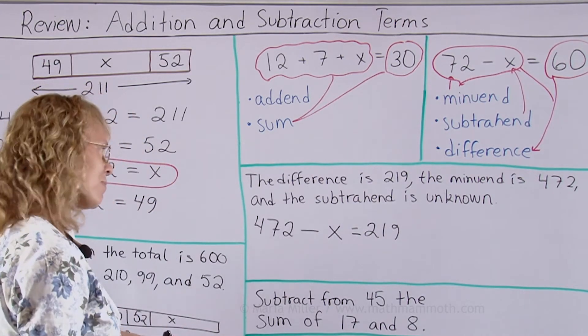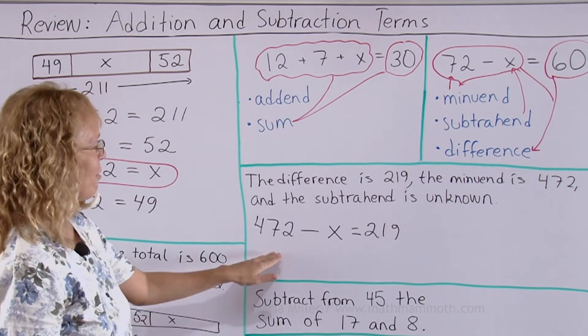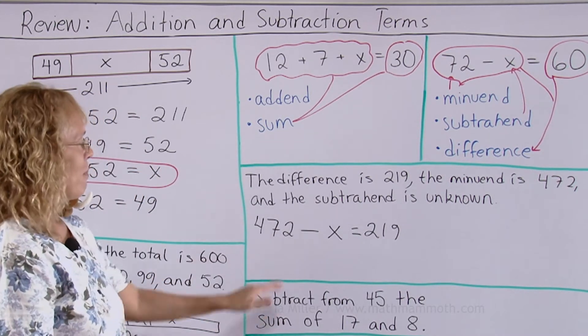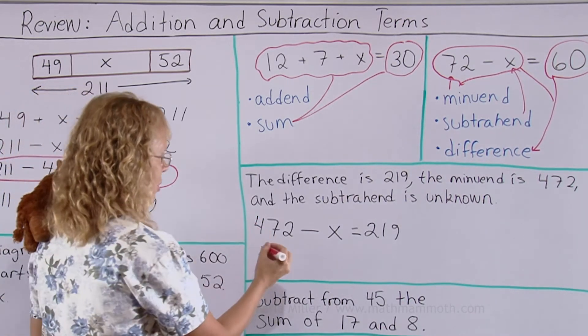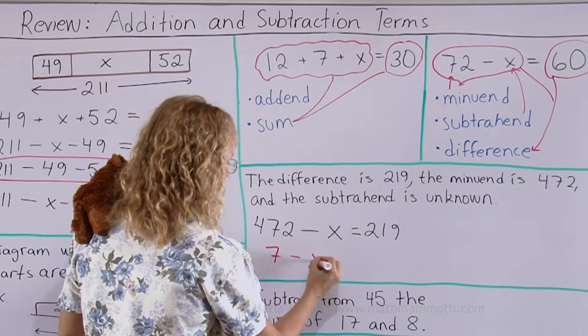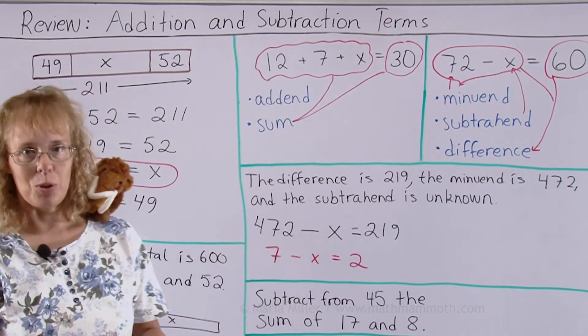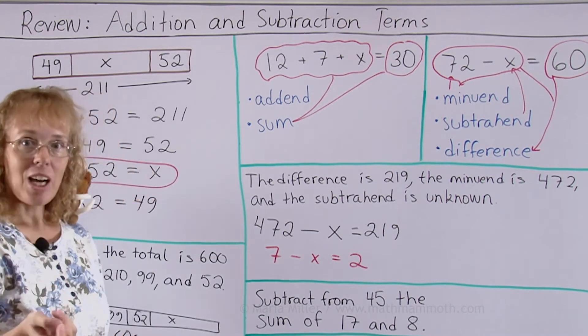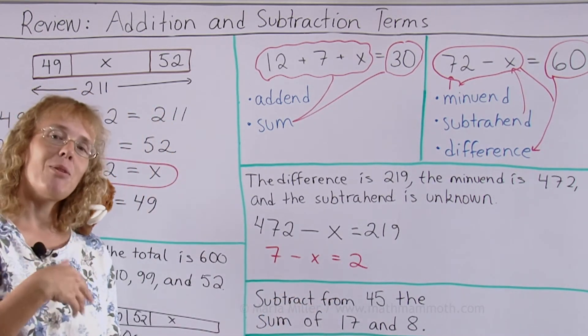But let's say we need to solve this too. Matthew, how would you do it? Oh yeah, he knows exactly how to do it. But if you don't know how to do this, make a similar problem that is easier, a helping problem. Would this be an easier problem to solve? 7 minus something equals 2. The answer is 5. But how do you get it using 7 and 2? You subtract 7 minus 2.